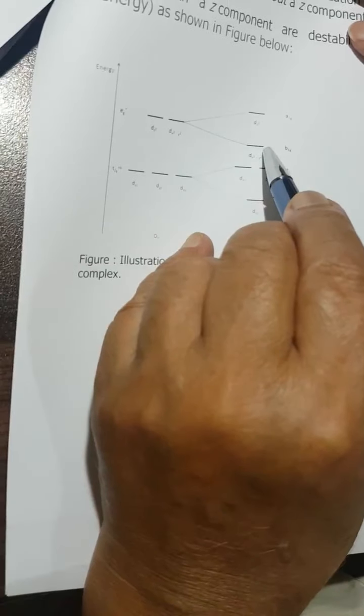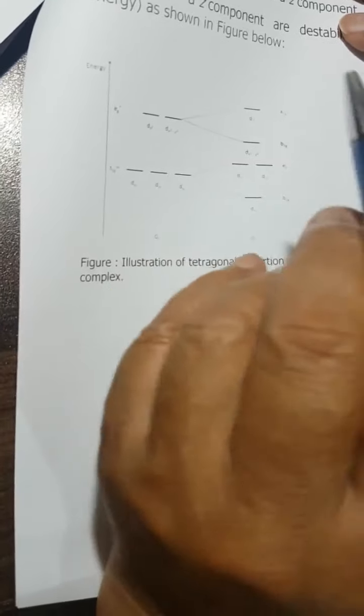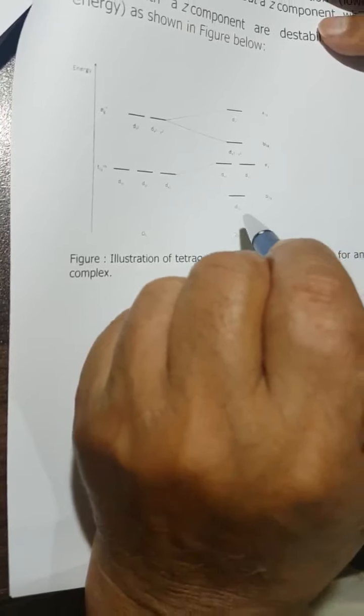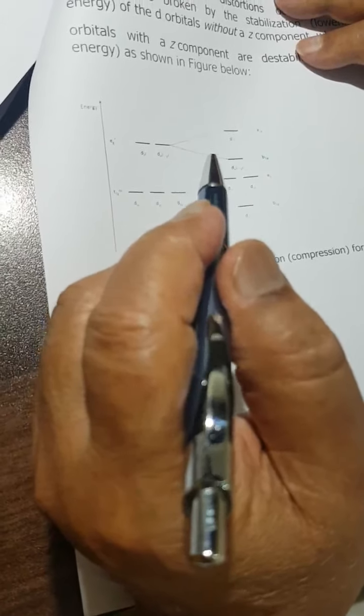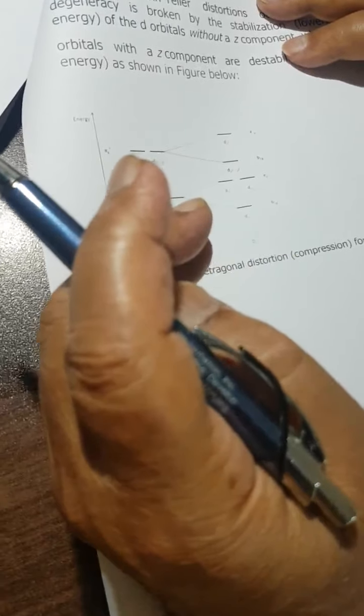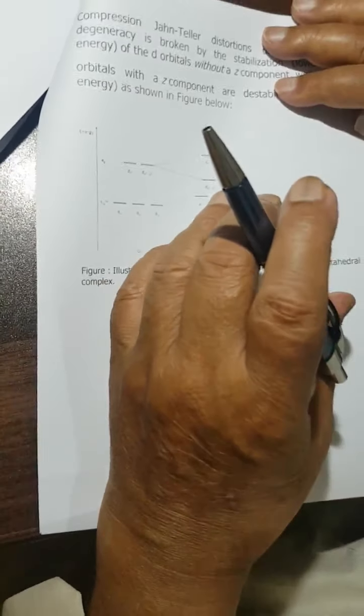The others remain up while xy comes down like this. This is the illustration of tetragonal distortion when compression for an octahedral complex is taking place.